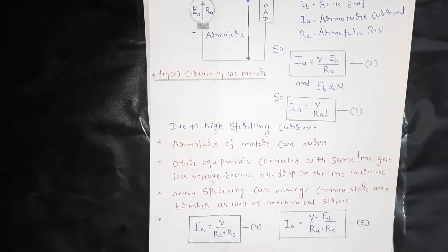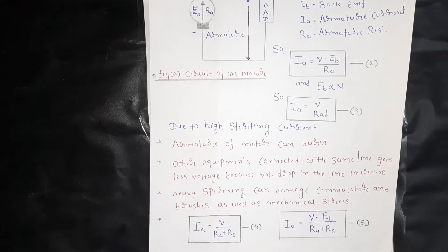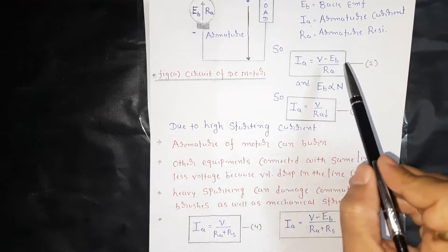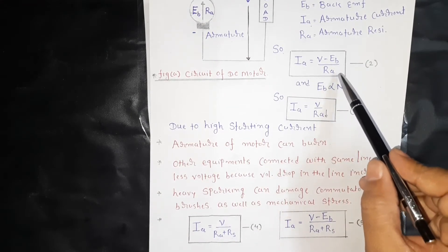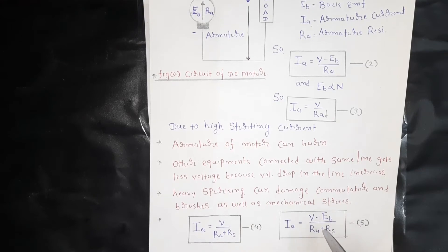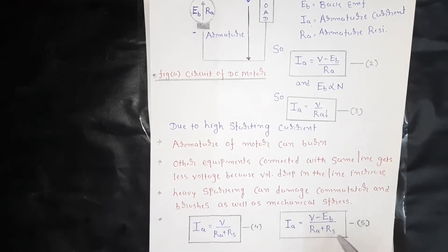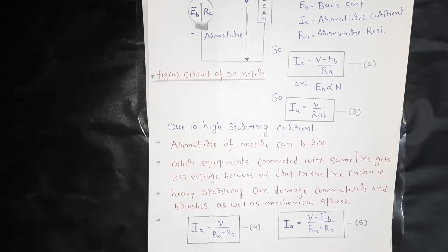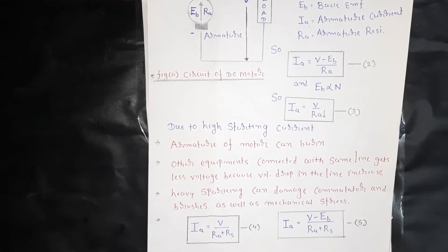This starting resistance does not need to be present throughout the full operation of the DC motor. Because as the speed of the DC motor increases, the back EMF also increases. This back EMF will counter the supply voltage, as shown in equation number 5: IA equals V minus EB divided by (RA plus RS). As the speed increases, back EMF increases, and when the back EMF reaches its maximum value, the starter decreases the starting resistance and ultimately cuts out all starting resistance to zero. The main purpose of the starter is to reduce the starting current to a very safe value so the DC motor cannot be damaged.